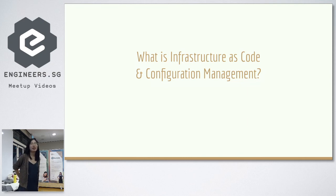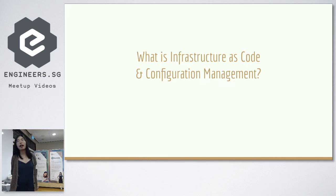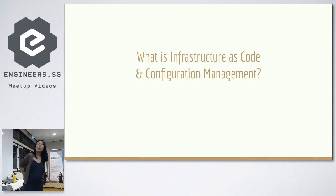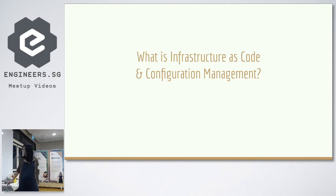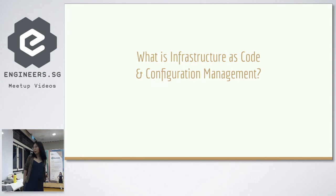For infrastructure, it's usually referring to the hardware, software, and networking required to deliver IT services. For our talk today, we are mainly focused on the environment using virtual machines, because for configuration management it's about managing the software and services on virtual machines or bare metal servers. IAC is actually the process to provision and manage infrastructure via code instead of a manual process. So what does provisioning and managing infrastructure mean, and what does configuration refer to?